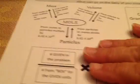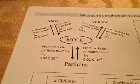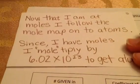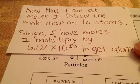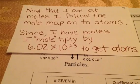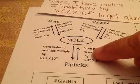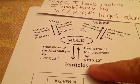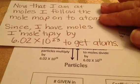Now that I'm at moles, I can do the next step. Following the mole map to atoms — since I have moles, I multiply. What do I multiply by? 6.02 times 10 to the 23rd. That will get me to atoms.